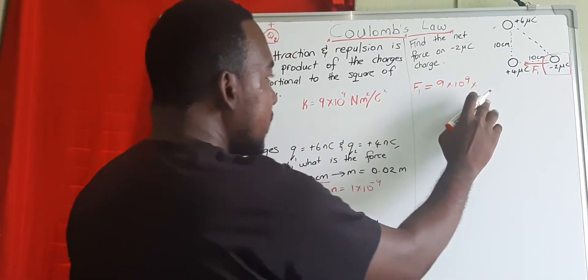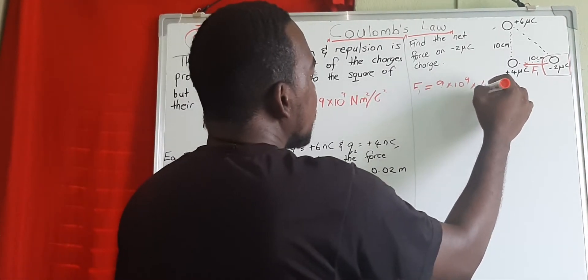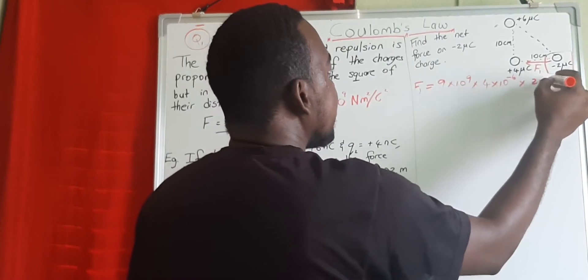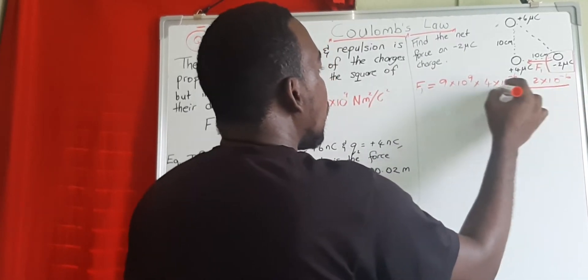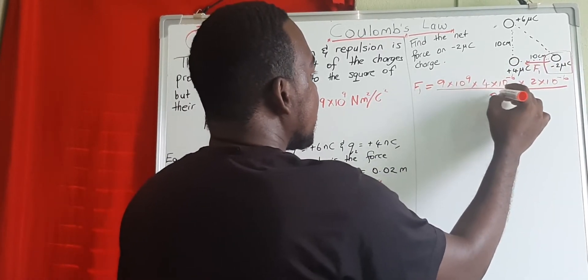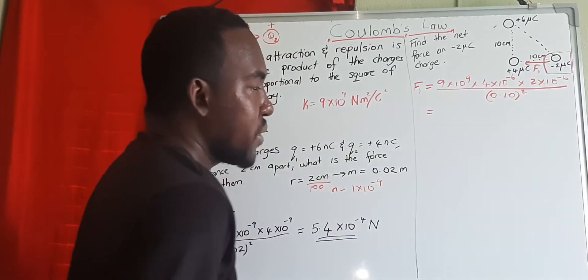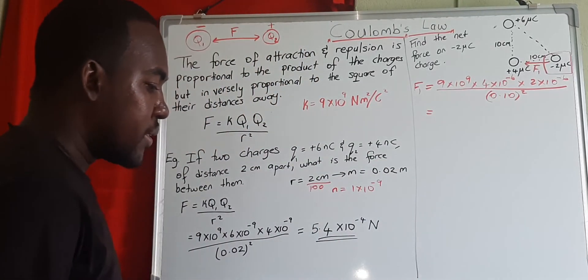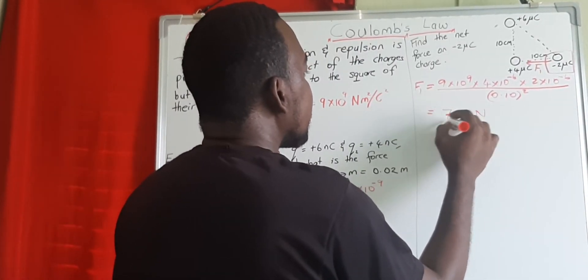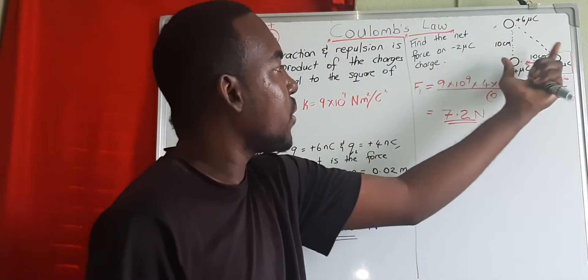To find F1, we use Coulomb's equation: k is 9 times 10 to the 9, q1 is 4 times 10 to the negative 6 (micro is 10 to the negative 6), and q2 is 2 times 10 to the negative 6. The distance is 10 centimeters, converted to 0.10 meters, which we square. This gives F1 = 7.2 newtons.